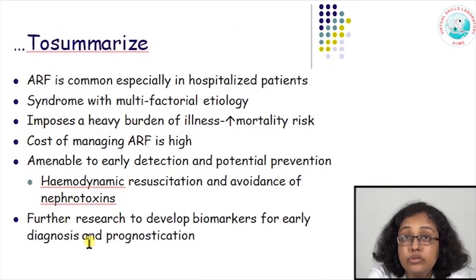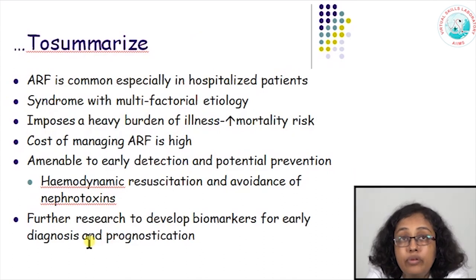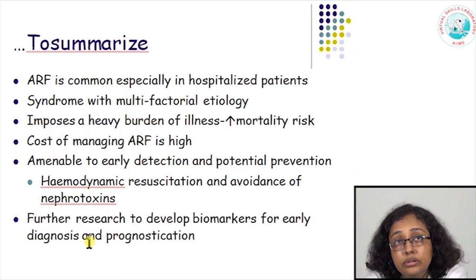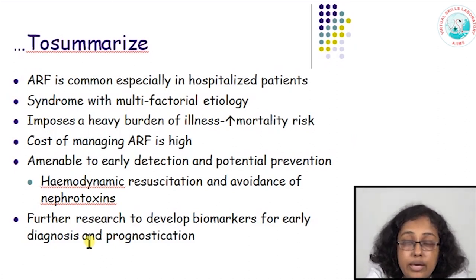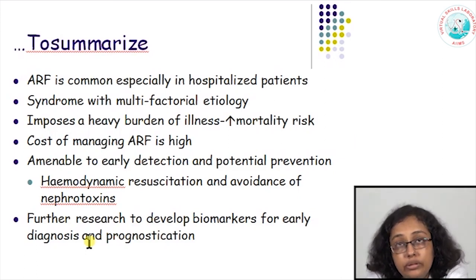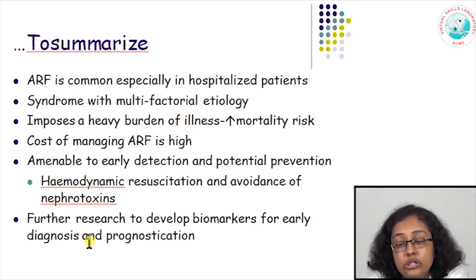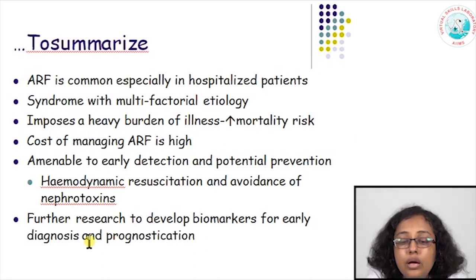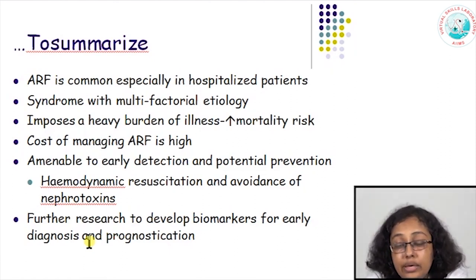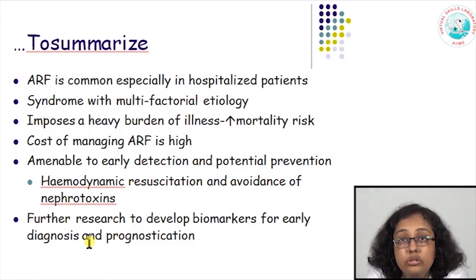To summarize: ARF is common, especially in hospitalized patients. Every patient may have multifactorial acute renal failure, so looking for multiple factors and thorough clinical evaluation is important. It imposes a heavy burden of illness — patients may require dialysis, which is expensive, with increased morbidity, increased mortality risk, and high cost of management. But it is amenable to early detection and potential prevention. Every patient who comes to the emergency or is hospitalized needs to be screened for risk factors. If hemodynamic resuscitation is started at the appropriate time and manner, and nephrotoxics are avoided, we can reduce the ARF burden. Further research is needed to develop biomarkers for early diagnosis and prognostication of acute renal failure.